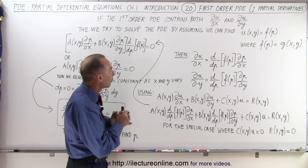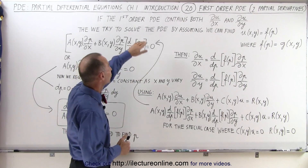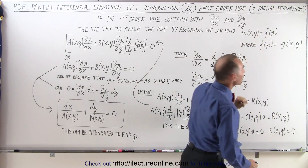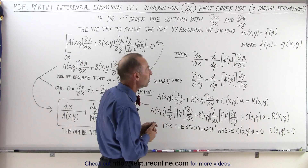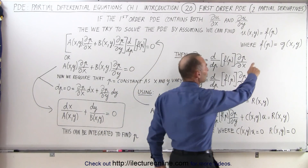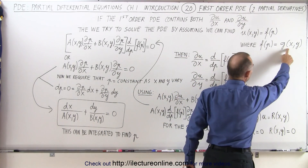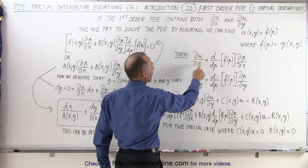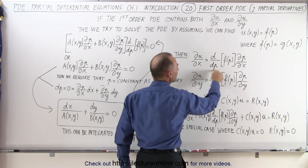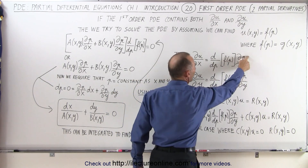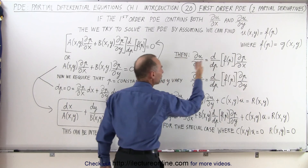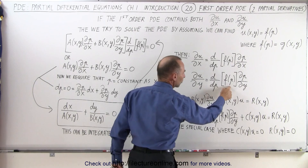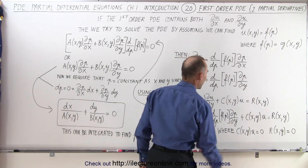So we're going to solve the equation with the assumption that we can find the function in terms of the function of P — just like what we've seen before — to make things a little bit easier, where the function of P is a function of X and Y. So what we're going to do now is write the partial of U with respect to X in terms of P, which is the d/dP of F(P) times the partial of P with respect to X. We do the same for the partial of U with respect to Y, which is the derivative with respect to P of F(P) times the partial of P with respect to Y.